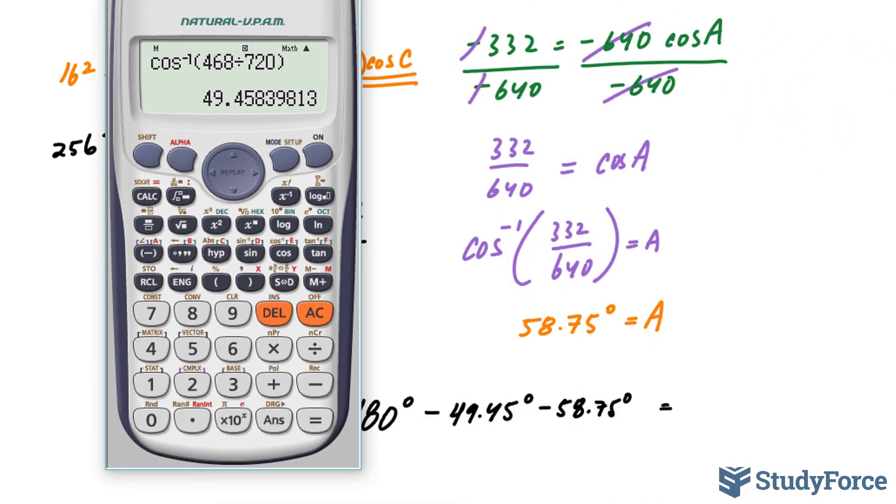Subtracting these numbers, 180 minus the answer we just got, minus 58.75. And this gives us an angle B of 71.79°.